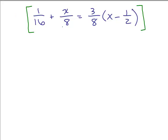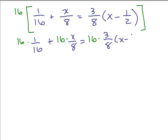And you see a 16, an 8, an 8, a 2, so the least common denominator is going to be 16. So we have 16 times 1/16 plus 16 times x/8 equals 16 times 3/8(x minus 1/2). So these cancel. The 8 goes into the 16 twice.